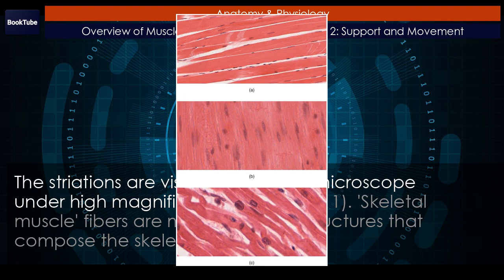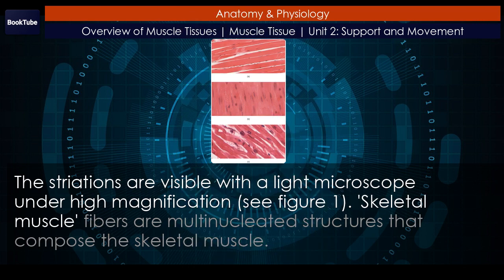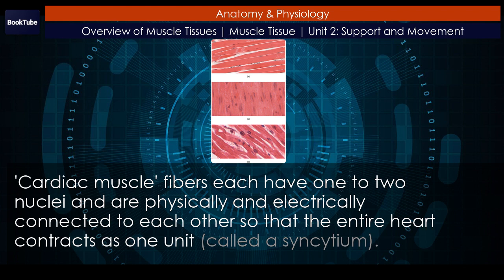See Figure 1. Skeletal muscle fibers are multi-nucleated structures that compose the skeletal muscle. Cardiac muscle fibers each have one to two nuclei and are physically and electrically connected to each other so that the entire heart contracts as one unit, called a syncytium.